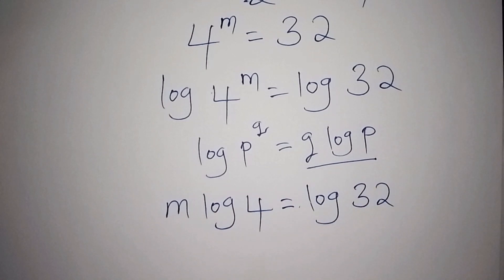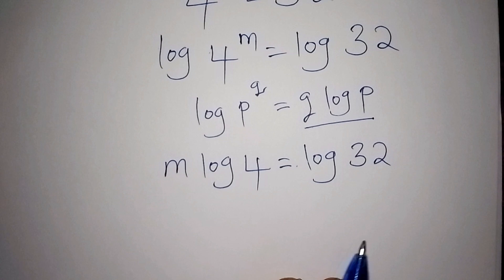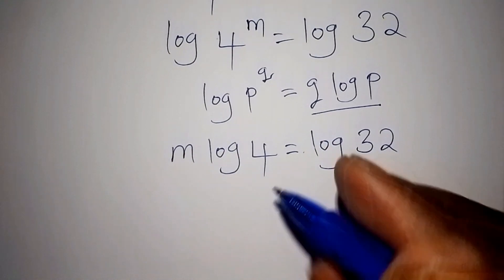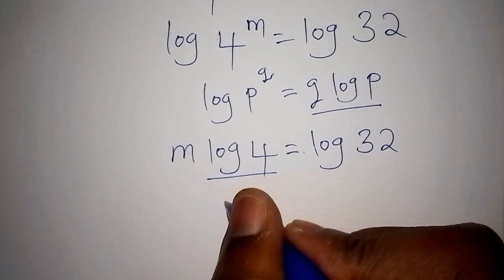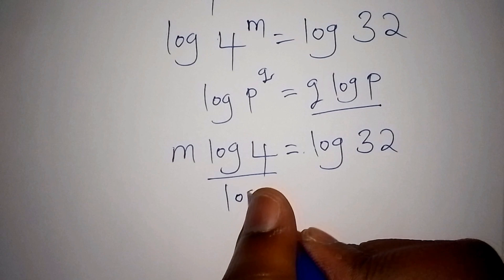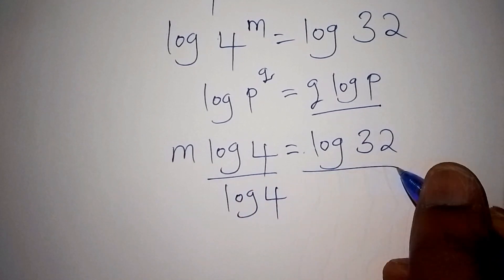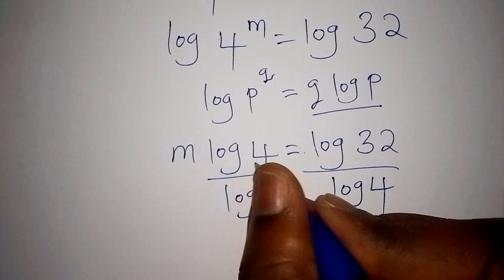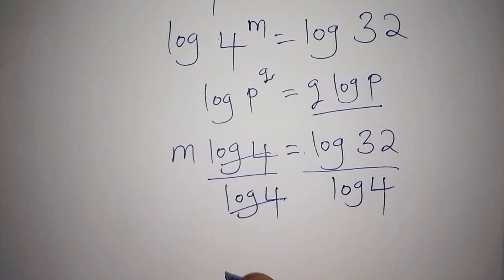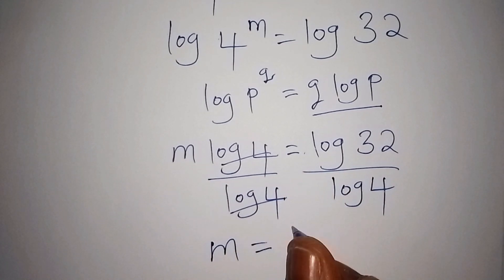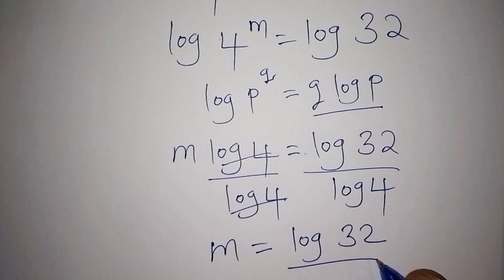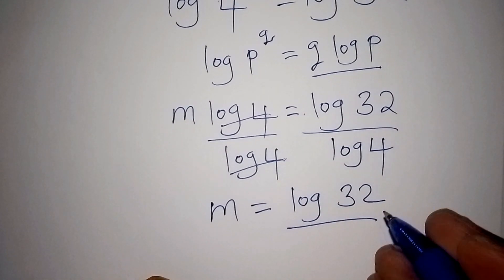In this case we shall divide both sides by log of 4. The log of 4 and log of 4 cancel each other, so our value for m is equal to log 32 over log 4.